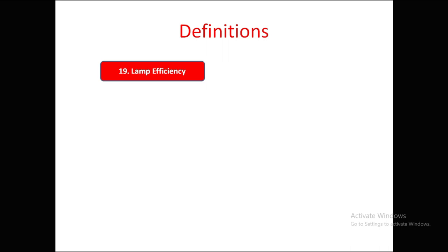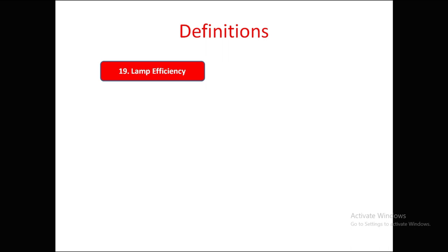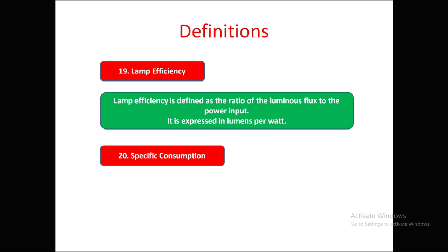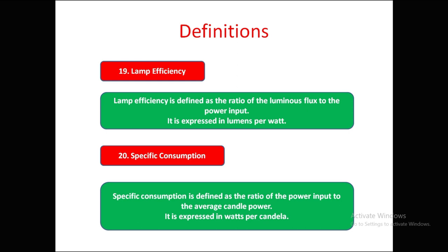Lamp efficiency is defined as the ratio of luminous flux to the power input. It is measured in lumens per watt. Specific consumption is defined as the ratio of power input to the average candle power, expressed in watts per candela.